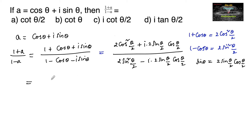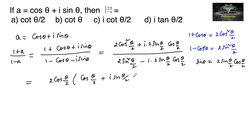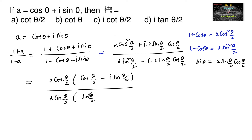We can take 2 cos(θ/2) common from the numerator, giving cos(θ/2) + i sin(θ/2). From the denominator, we take 2 sin(θ/2) common, giving sin(θ/2) − i cos(θ/2).